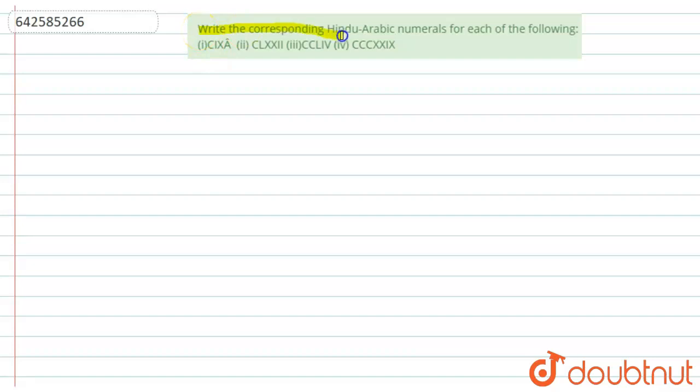Write the corresponding Hindu-Arabic numerals for each of the following. So let's start with the first number. The first number is, this is not there, it is given as, it is a misprint or mistyping. The first number is: